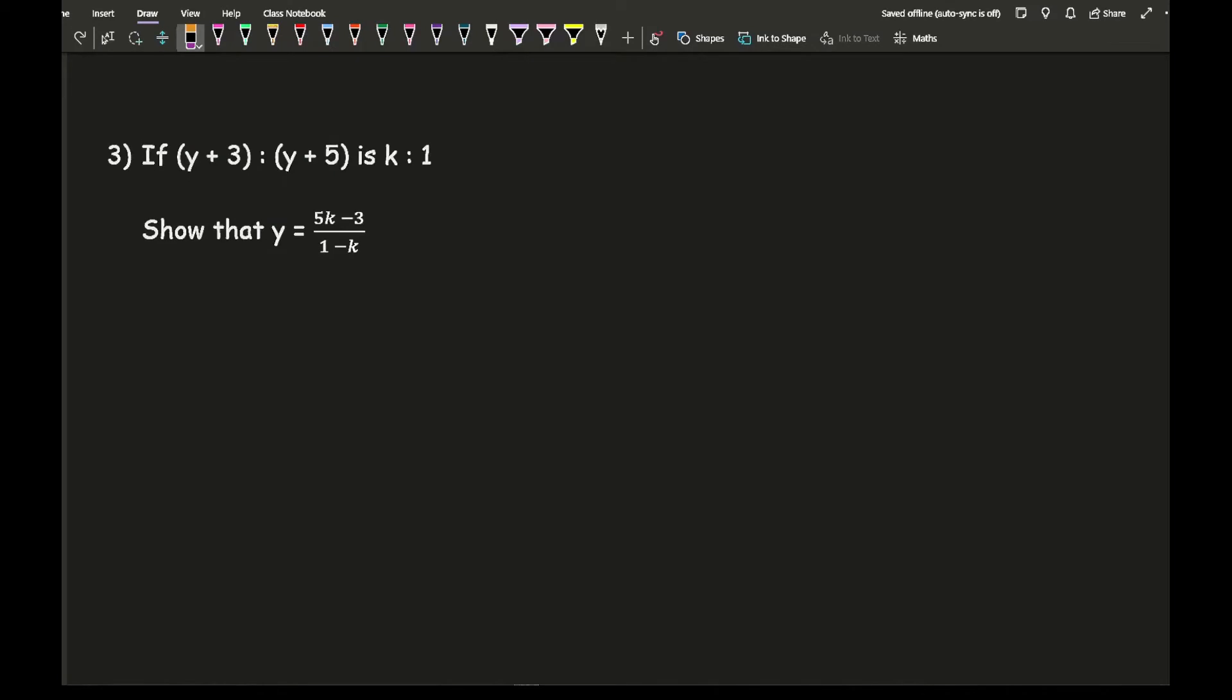Moving on to question three, it says, if y plus 3 to y plus 5 is k to 1, show that y equals 5k minus 3 over 1 minus k. Going through the steps, first step, we've converted this into a fraction. I've got y plus 3 over y plus 5, and that's equal to k over 1. The second step is cross multiplying. I end up with y plus 3 equals k times y plus 5. Expanding that out, I end up with y plus 3 equals ky plus 5k.